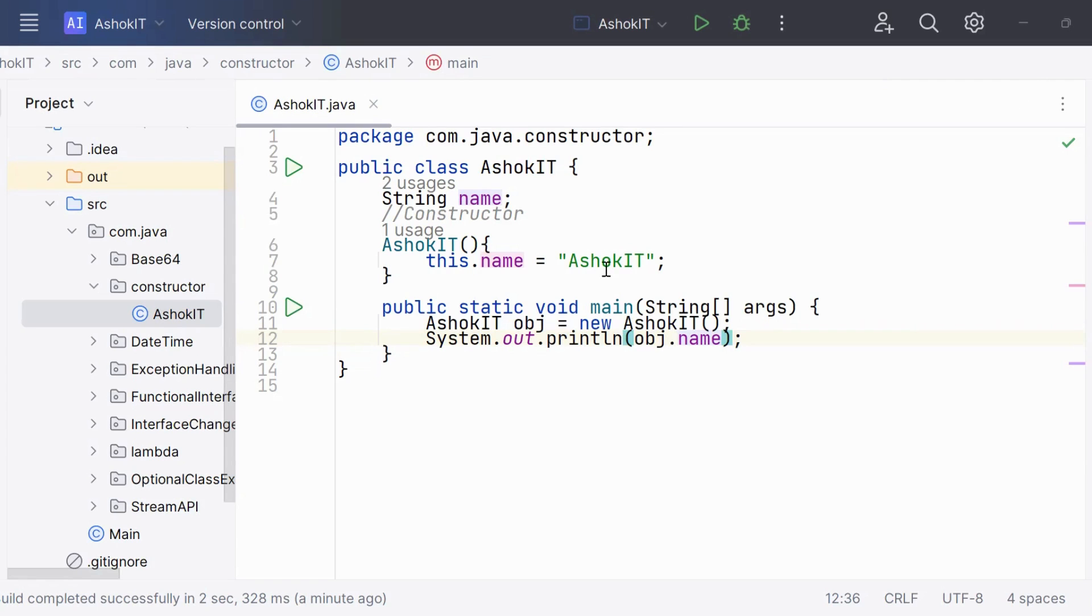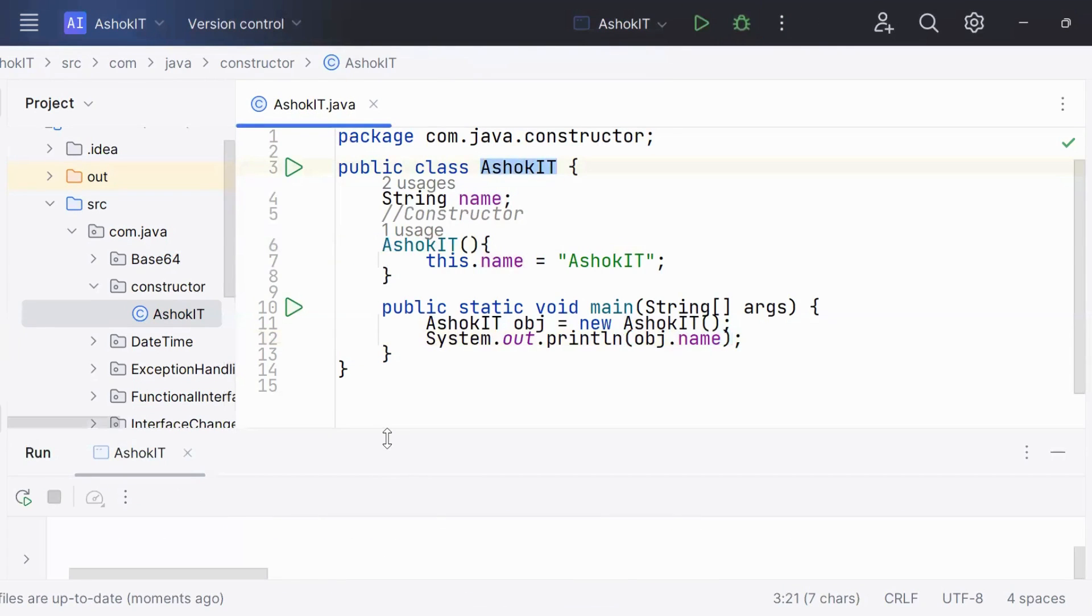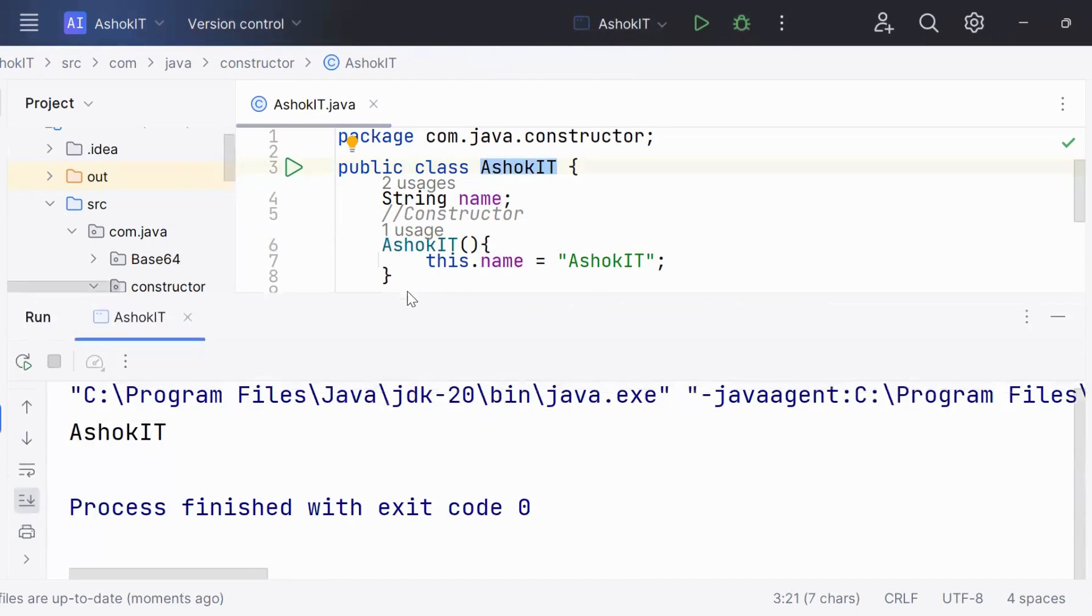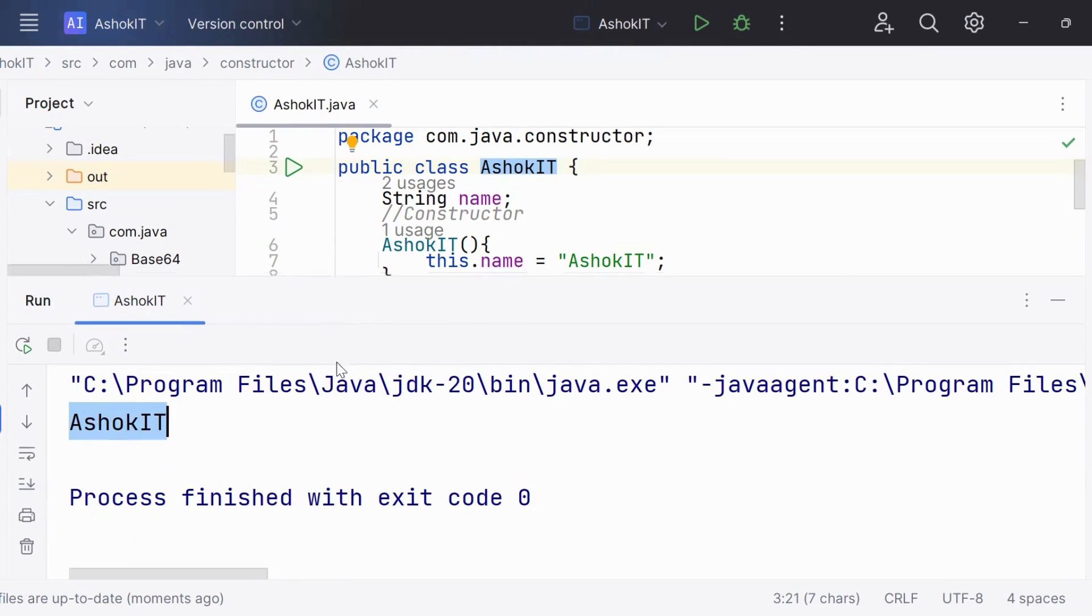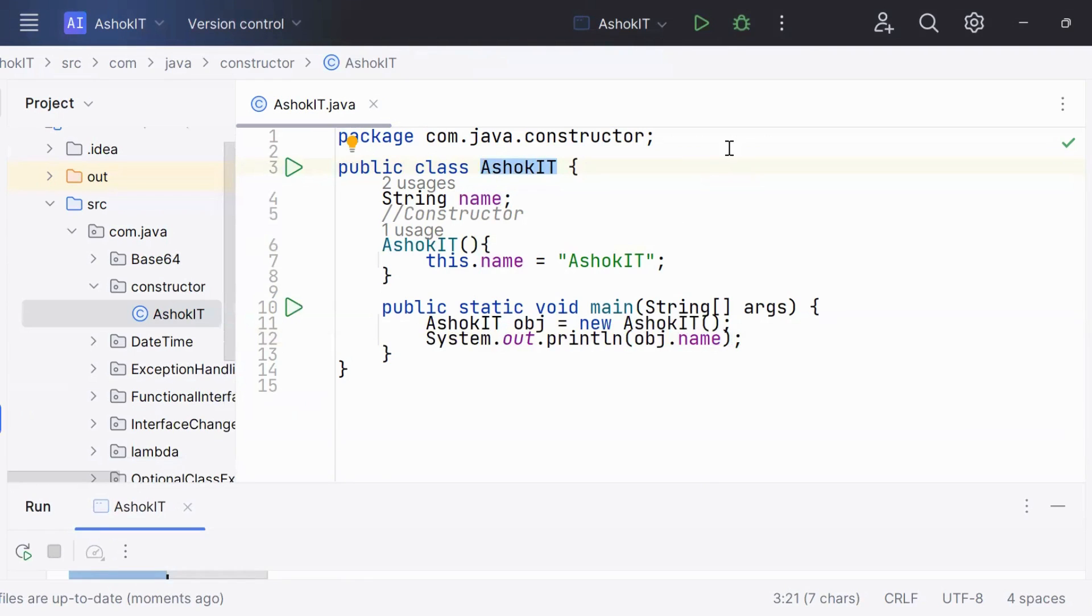This code segment is an example of default constructor. Here, this is our constructor and you can see the name of our constructor is same as the name of our class. Now let's run this program and see the output. As you can see, the program is successfully compiled and we got the output as expected.